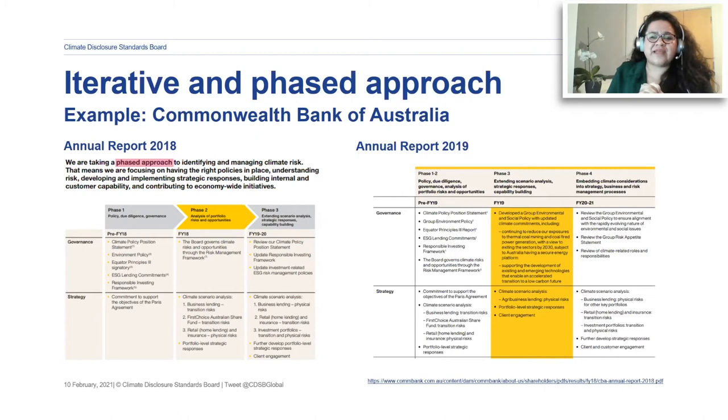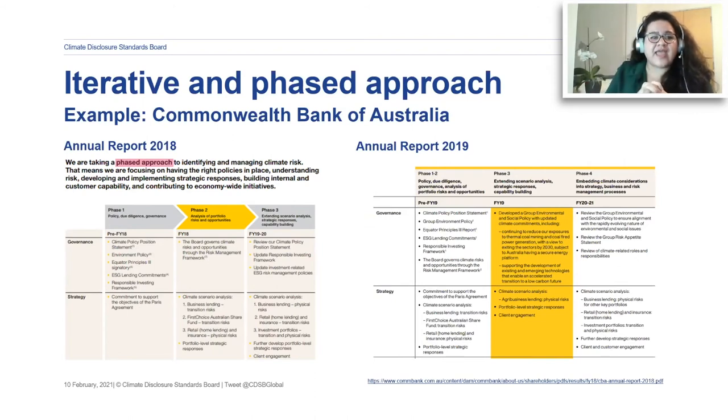An example on screen is from the Commonwealth Bank of Australia, who year on year have disclosed their phased approach — clearly showing what Phase 1, Phase 2, Phase 3, and onwards looks like, and updating us each year. Some years they don't complete all the work they intended in a given phase, and that passes into the next year. But this transparent approach about how you're tackling this information is very interesting — investors don't expect everyone to have a crystal ball, but they want to know that you're taking it seriously and embedding it into your business.